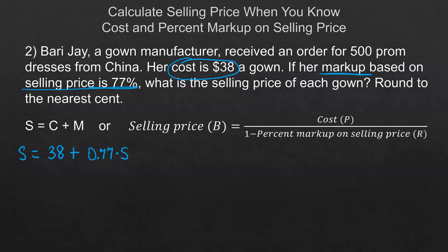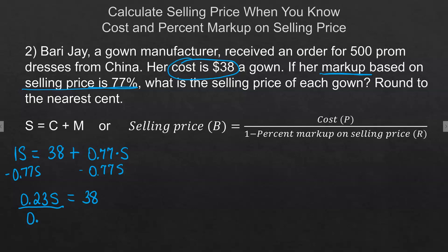Here's how we set this up. You have to do some equation solving. We want to get the S's together on one side. This is 1S representing 100% of the selling price, and we subtract 0.77S from both sides, giving us 0.23 times S equals 38. When resolving these equations, there are only about three different basic equation types you need to know how to solve — other than that, we don't really use algebra in this class.